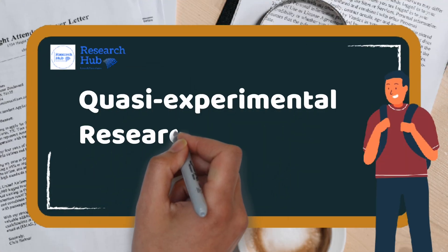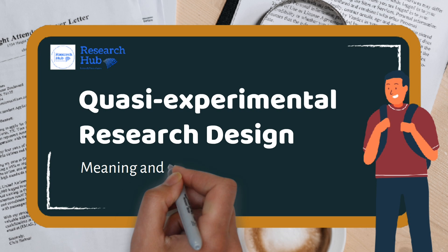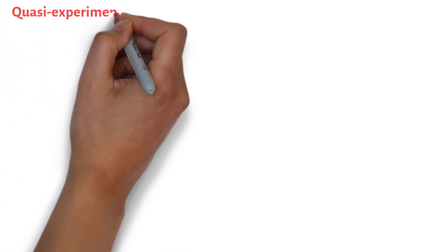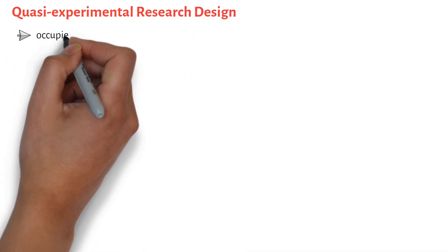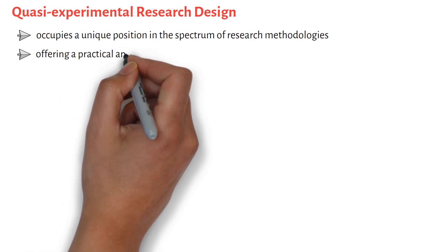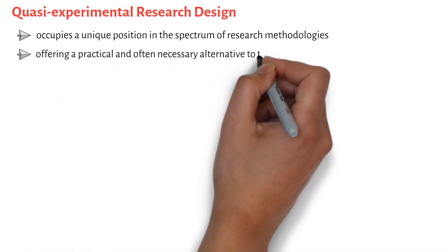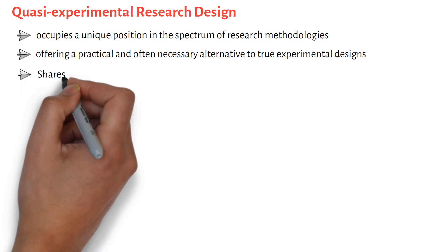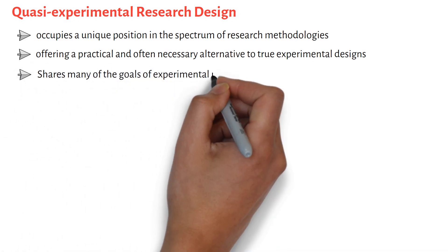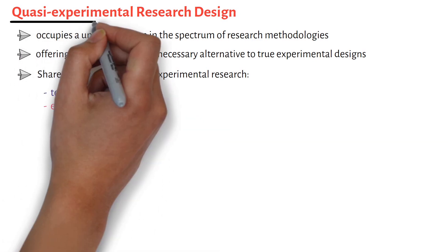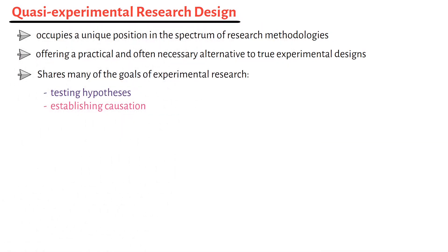Quasi-experimental research design: meaning and key concepts. Quasi-experimental research design occupies a unique position in the spectrum of research methodologies, offering a practical and often necessary alternative to true experimental designs. While it shares many of the goals of experimental research, such as testing hypotheses and establishing causation, quasi-experimental designs differ in their approach, particularly in the absence of random assignment.